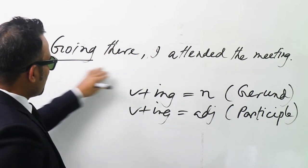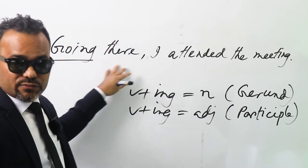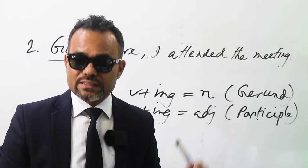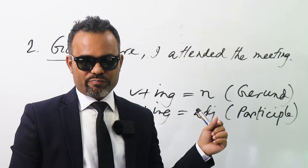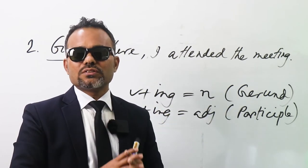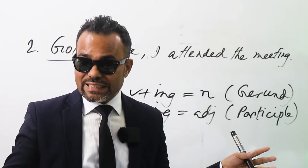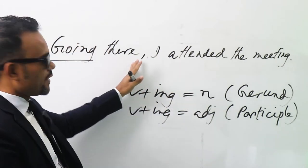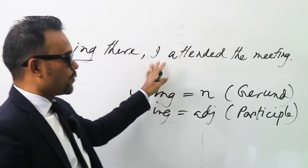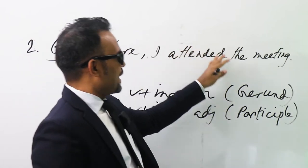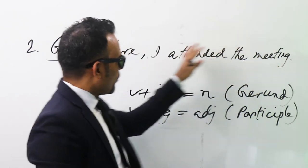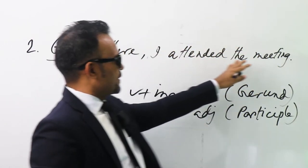We can consider 'going there' as a phrase, but in modern English they call it a clause. Phrase or clause, whatever it is, you can omit it — you can remove it — and still you get the meaning: 'I attended the meeting.' I attended the meeting.